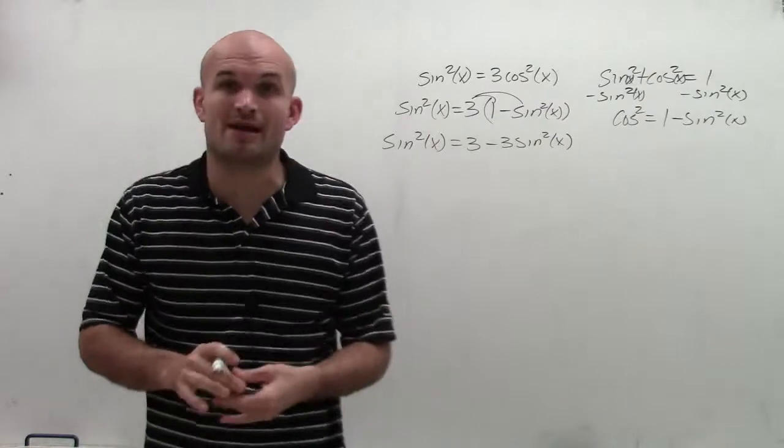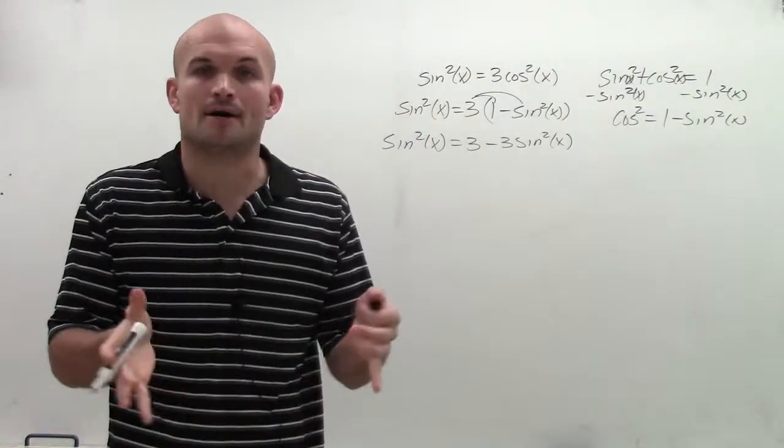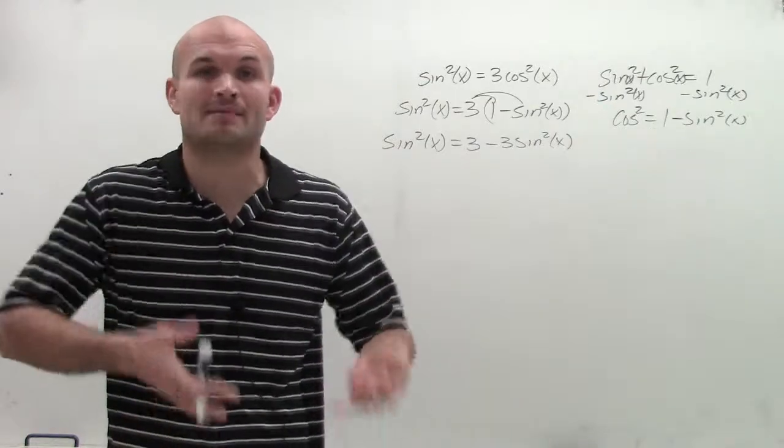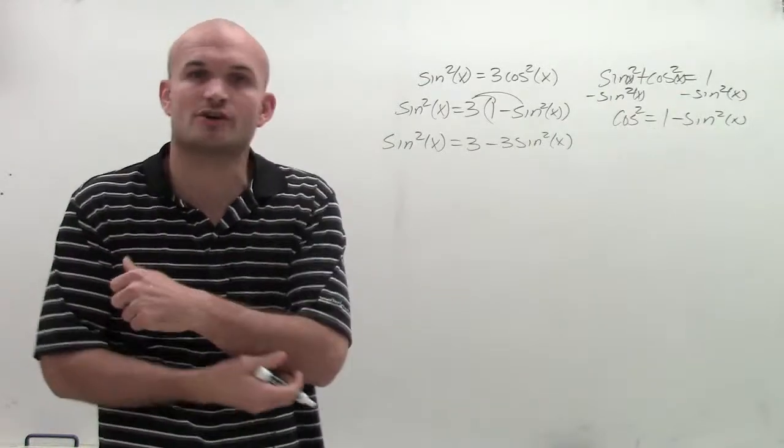All right, so whenever solving an equation, whenever we had more than one variable, what we had to do is always get them to be on the same side, right, and see if we can combine them. Because the main important thing is we need to isolate our trigonometric function.